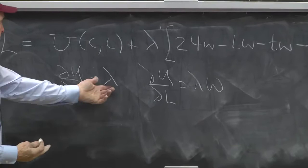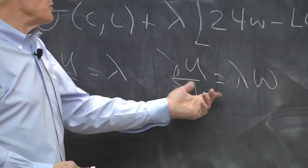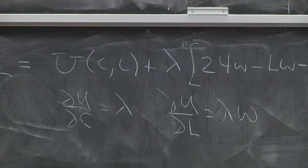Lambda is the marginal utility of consumption. I go to the point where the marginal utility of leisure is equal to the marginal utility of consumption times the wage rate because that's what I get for working more. Nothing unusual about that part.